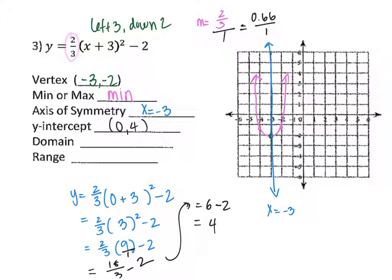The domain is all real numbers, because that's what it is for all quadratics — there's an arrow to the left and an arrow to the right. For the range, the lowest y value is negative 2, with a bracket. The highest y value has an arrow pointing up, so it goes to positive infinity.